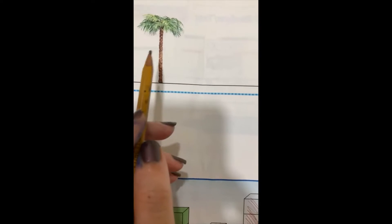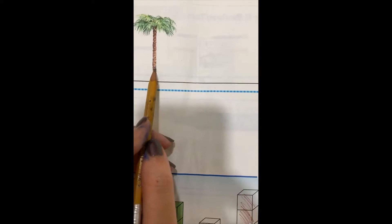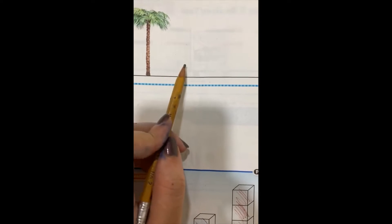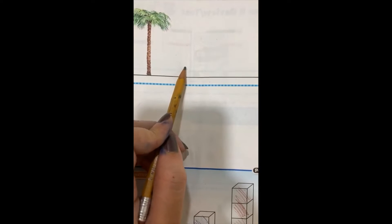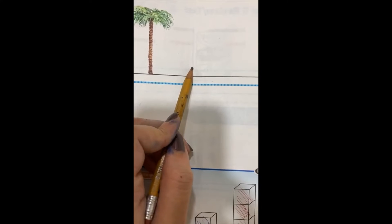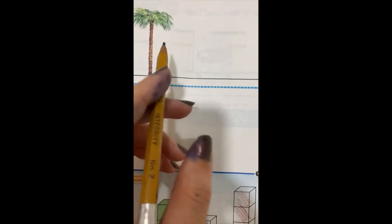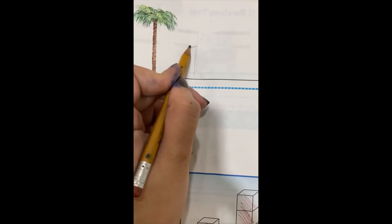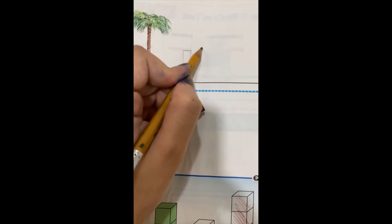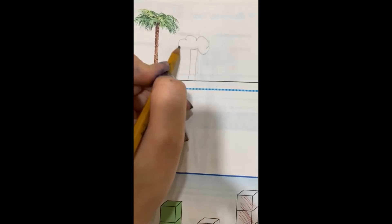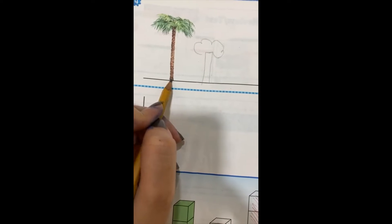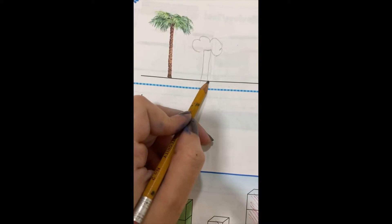In exercise 4, we have this tree that is taller than the other tree. Let's draw it together to show the other shorter tree. So this tree is taller than the other tree.